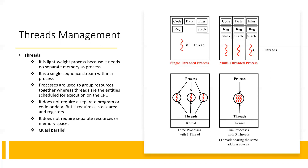Threads are always related to a process. Any process that is invoked or generated can have one thread or multiple threads activated. For example, consider a process with code, data, or a program file — if that process has one thread generated, we say that it is a single-threaded process.